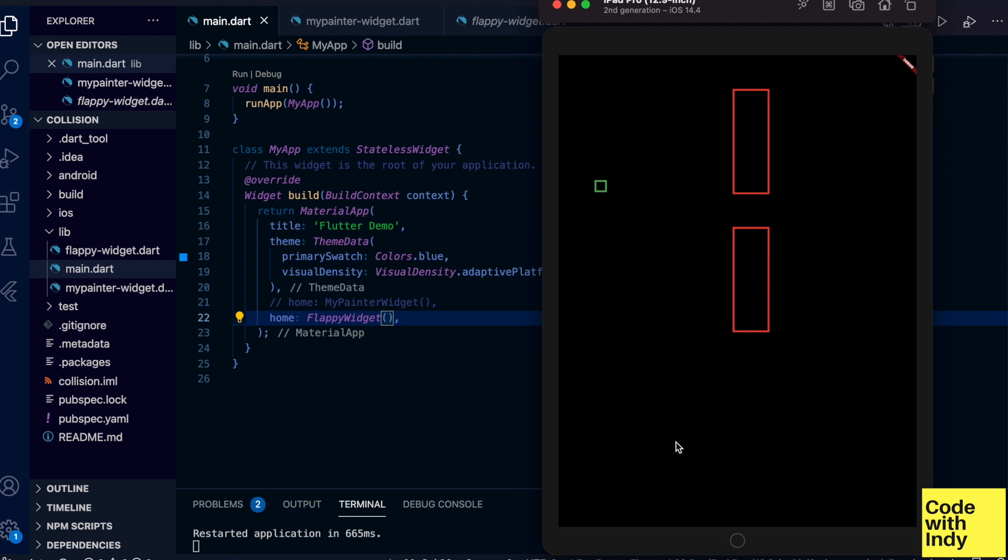This problem can be quite complex depending on the complexity of your simulation or game. For example, it depends on the properties of the objects, the number of objects, and whether it is a 2D or 3D game.